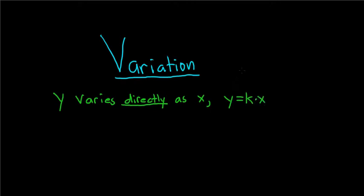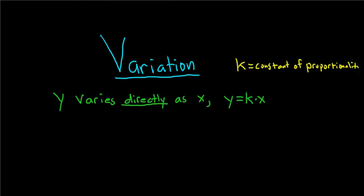You might ask what is K? K is called the constant of proportionality or the constant of variation. So if you see directly anywhere, you know it's K times X. And you can change the variables — if I said M varies directly as P, it would be M equals K times P. Y and X are just variables; it could be any other letter.